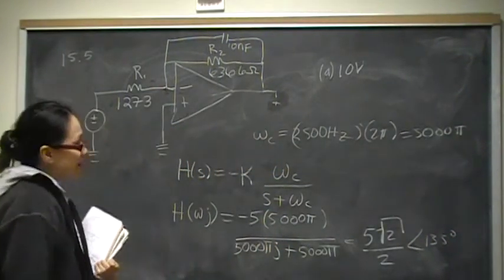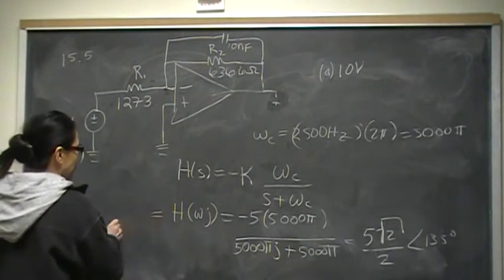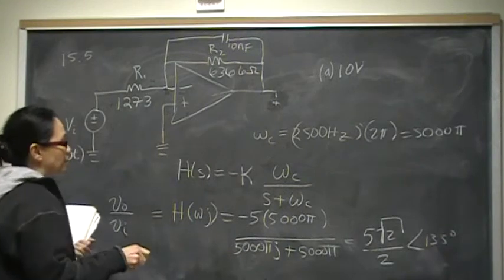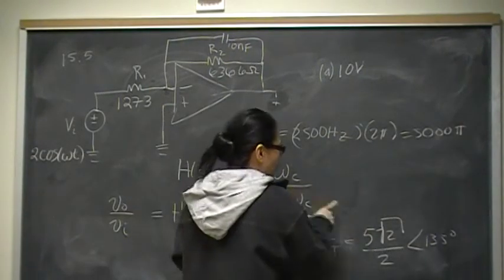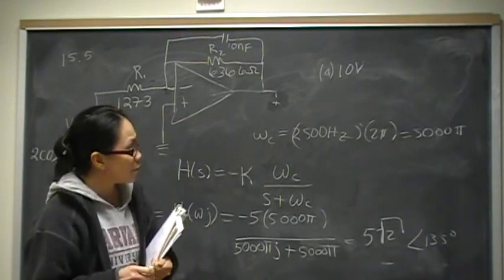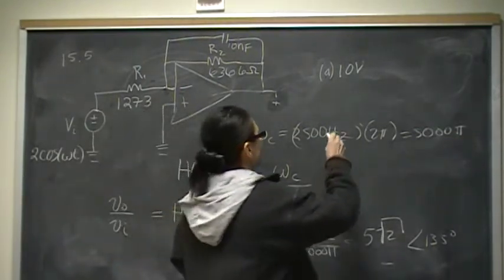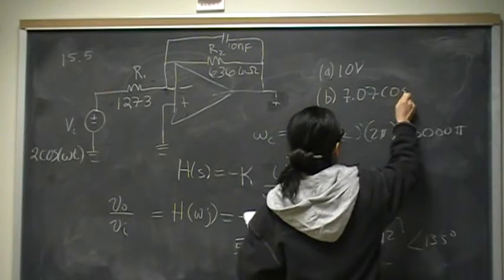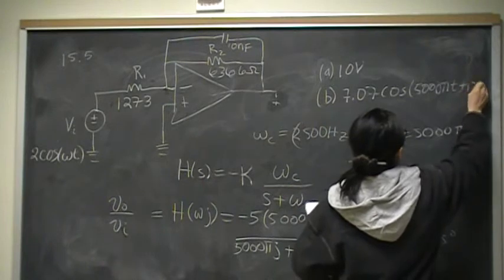That is not the output voltage — that is the transfer function. However, the transfer function is V_out over V_in. So if we want V_out, we simply multiply the transfer function by V_in. V_in was 2, so that 2 cancels, and V_out is 5√2 at angle 135°. Since 5√2 is 7.07, for part b at the cutoff frequency we get 7.07 cosine(5,000πt + 135°) volts.